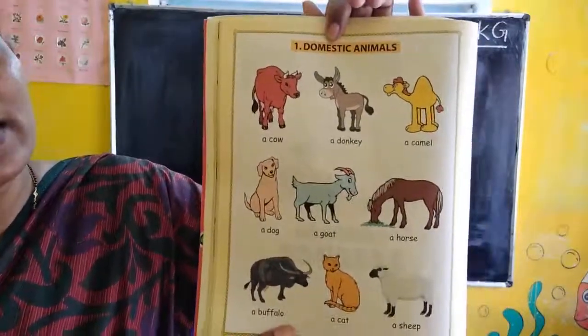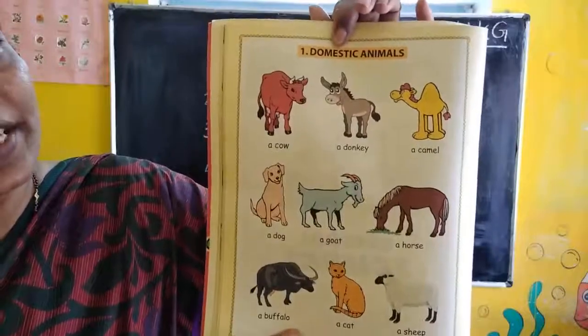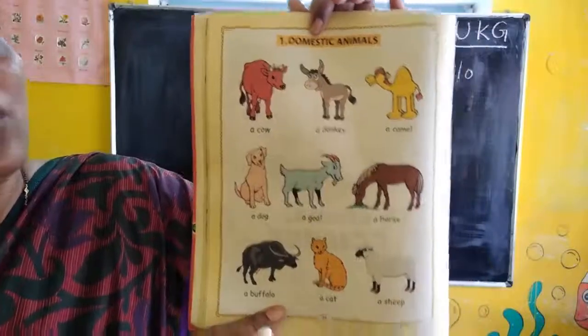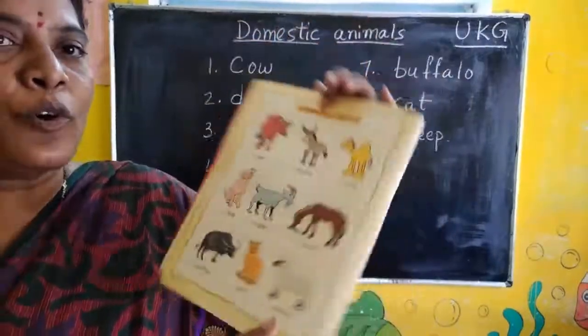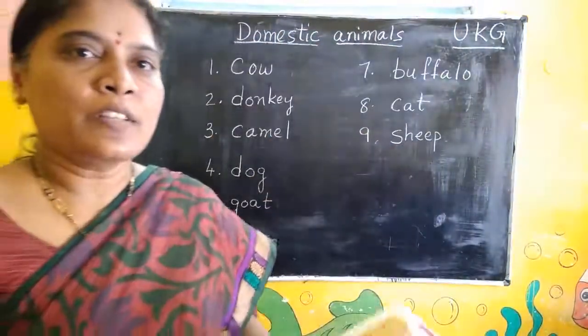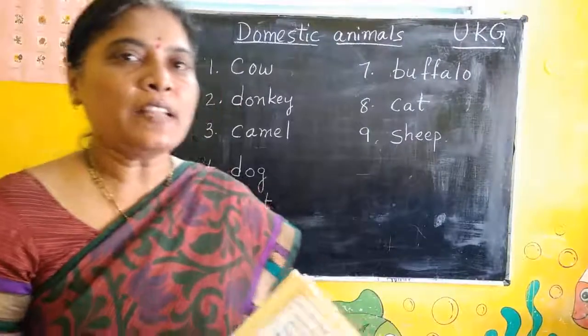Domestic animals. Okay children, now start writing. Take out your four-rule notebook. Start writing.